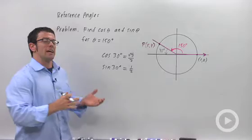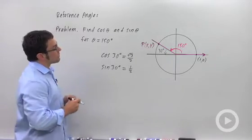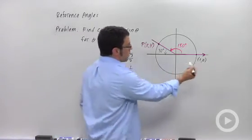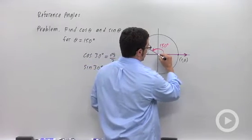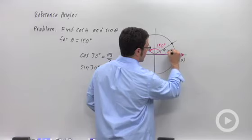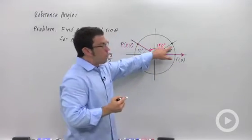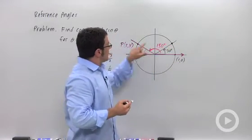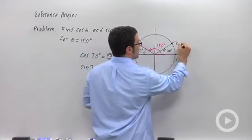Now, what does this have to do with the cosine and sine of 150 degrees? Well, if you were to draw the angle 30 degrees, it would be right here. This point would be the mirror image of point P across the y-axis. Let's call it point Q.